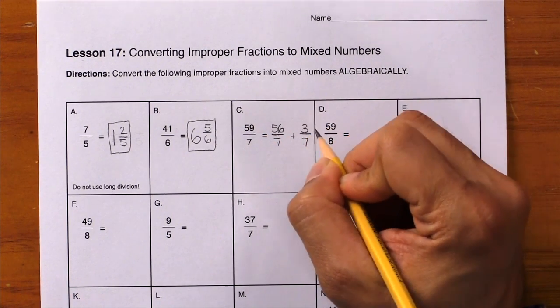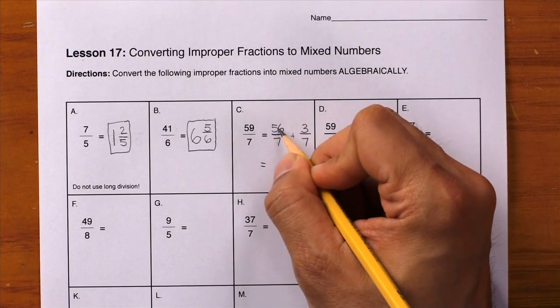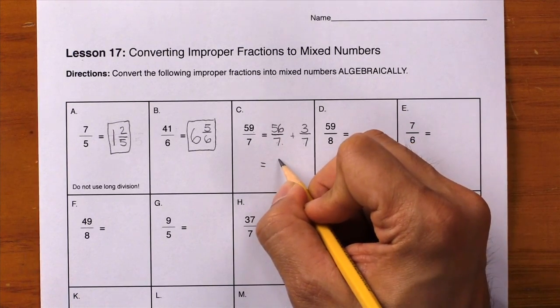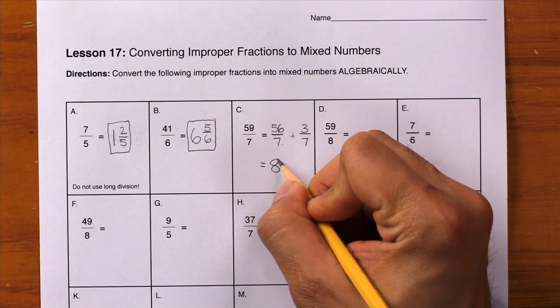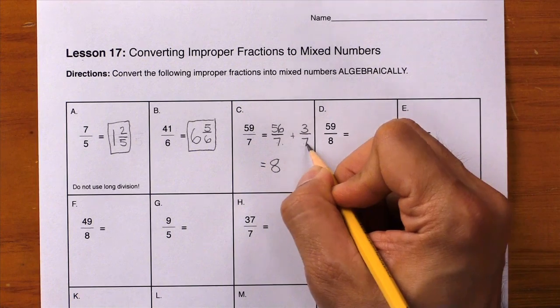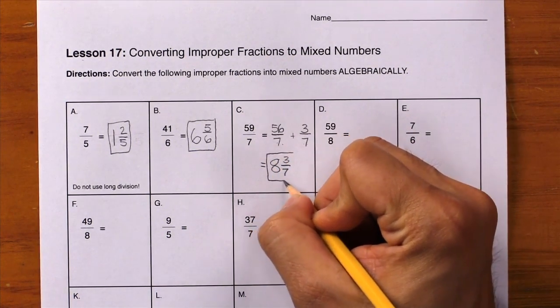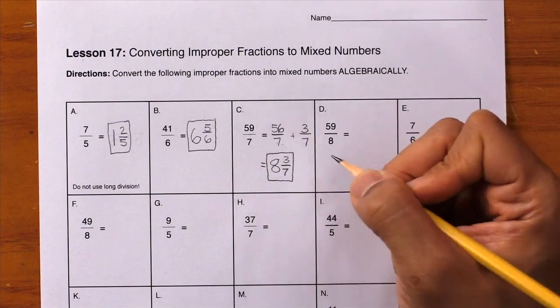Next line: what is 56 divided by 7? The answer is 8, so write your whole number nice and big. What's left over? We have 3 sevenths. Box your final answer of 8 and 3 sevenths.